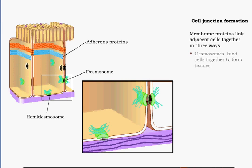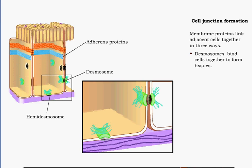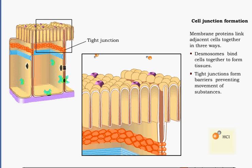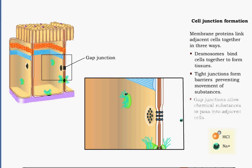Tissues are clusters or layers of cells that are permanently linked together by membrane proteins. These cell junctions act to anchor cells together, form watertight barriers, and form conduits for movement of ions, like sodium or potassium, between adjacent cells.